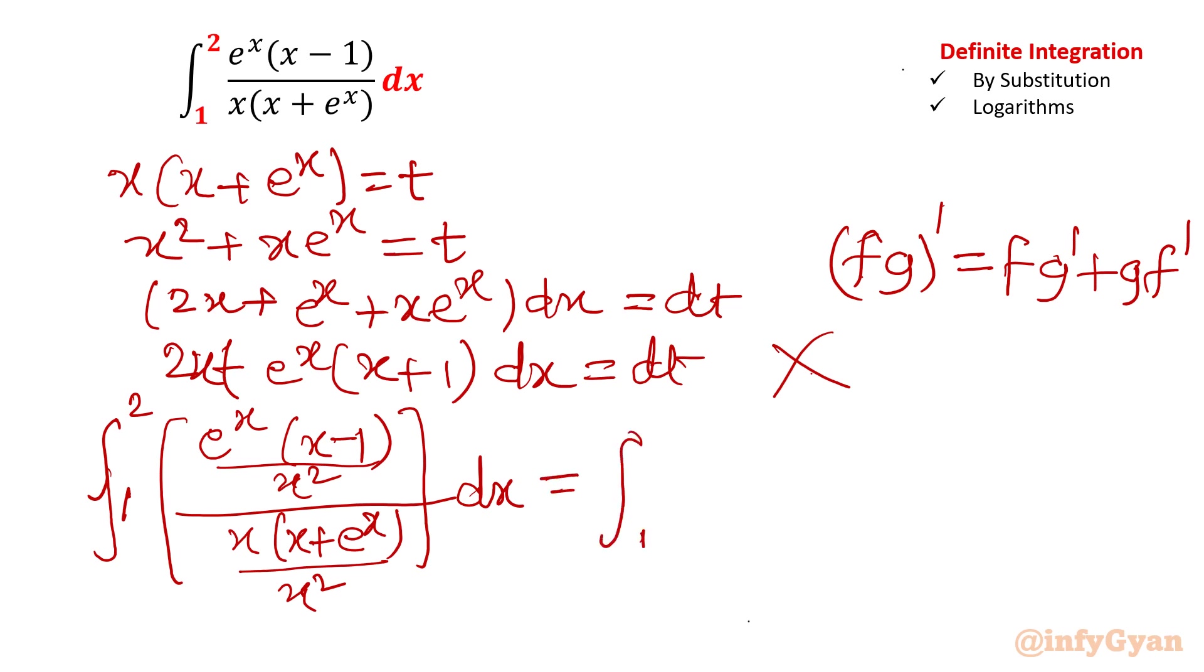Integration 1 to 2. I will write e raised to the power x bracket 1 over x minus 1 over x square. And denominator, that is 1x will be cancelled out. 1 x is left. So 1 plus e raised to the power x over x. This is our denominator dx.